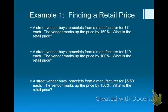In example one, there are three scenarios — all the same scenario, basically, just different numbers. We're going to do the first and the third one. These are like those carts you see on the side of the road, or street vendors in New York City. A street vendor buys a bracelet from a manufacturer for $7 each and marks up the price by 150%. What is the retail price? Wholesale price is what they pay; retail price is what you pay. The difference is the markup — also known as profit.